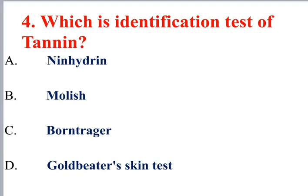The ninhydrin test is used for protein and amino acid identification. The Molisch test is for carbohydrate identification. The Borntrager test is for glycoside identification. The gold beater skin test and ferric chloride test are used for tannin identification.